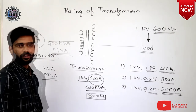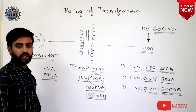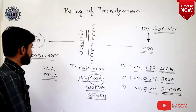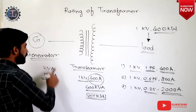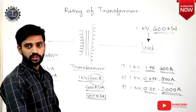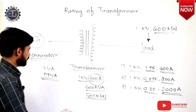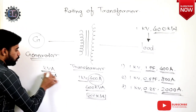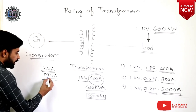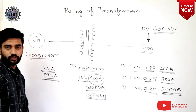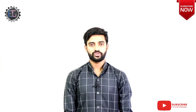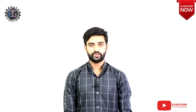A question may come to mind: why only the transformer? Why not the generator or alternator? Generators and alternators also don't know the power factor of the load, which is why generators and alternators are also specified in terms of KVA or MVA.